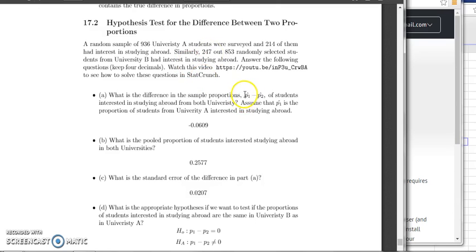So suppose that P1 hat is the sample proportion for University A, and P2 hat is the sample proportion for University B. So if I ask you to calculate 99% confidence interval for P1 hat minus P2 hat, how can you do that in StatCrunch? Now because, look at this, this is proportion and we have two samples.